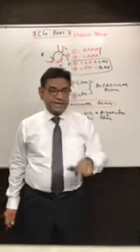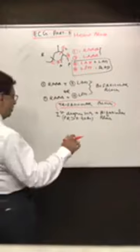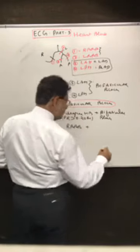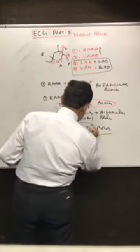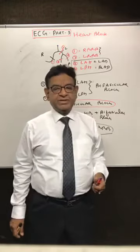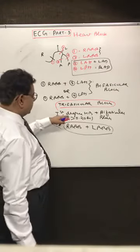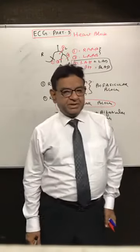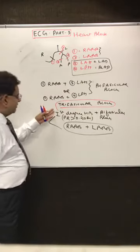There is one more criterion for tri-fascicular block: if in the same ECG recording you are getting right bundle branch block in some leads and left bundle branch block in others — RBBB alternating with LBBB in the same patient on the same ECG — that also indicates tri-fascicular block. So there are two criteria: first-degree heart block plus bi-fascicular block, or RBBB alternating with LBBB.